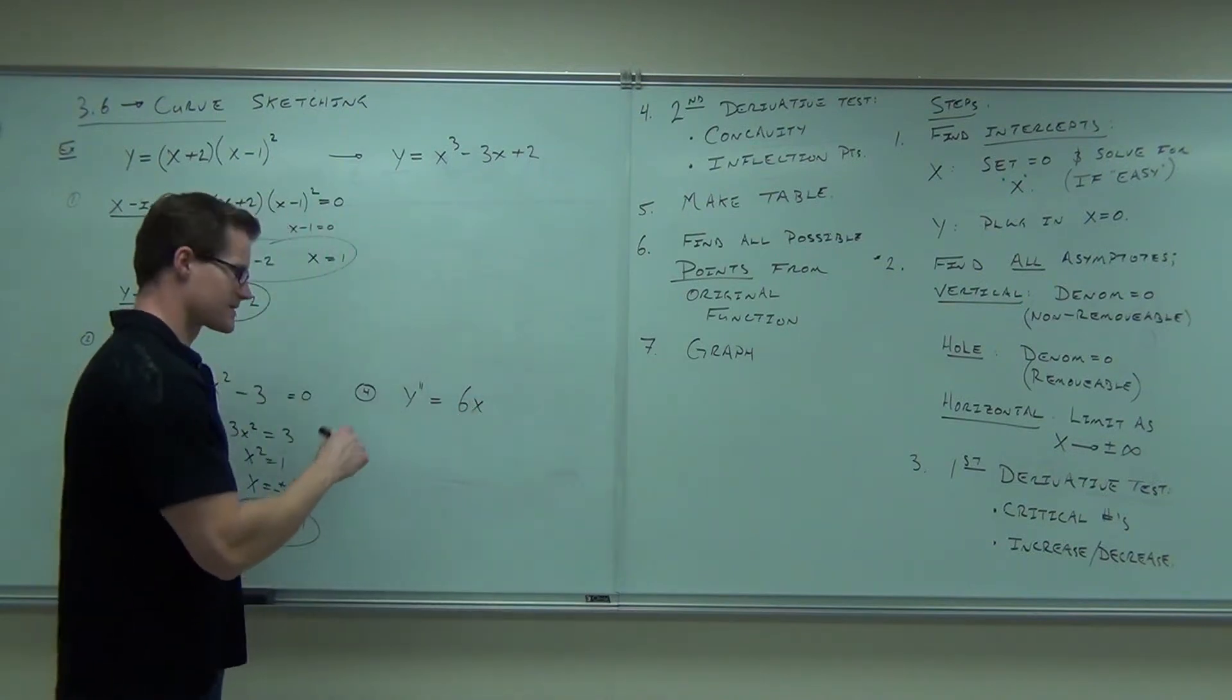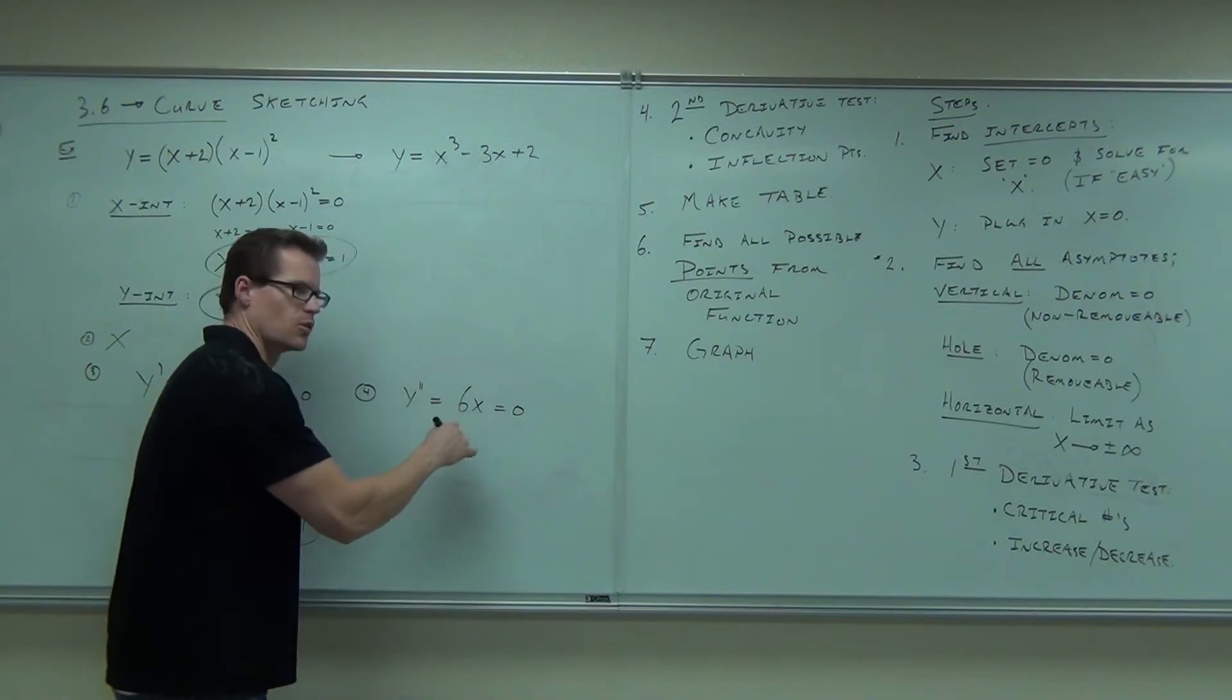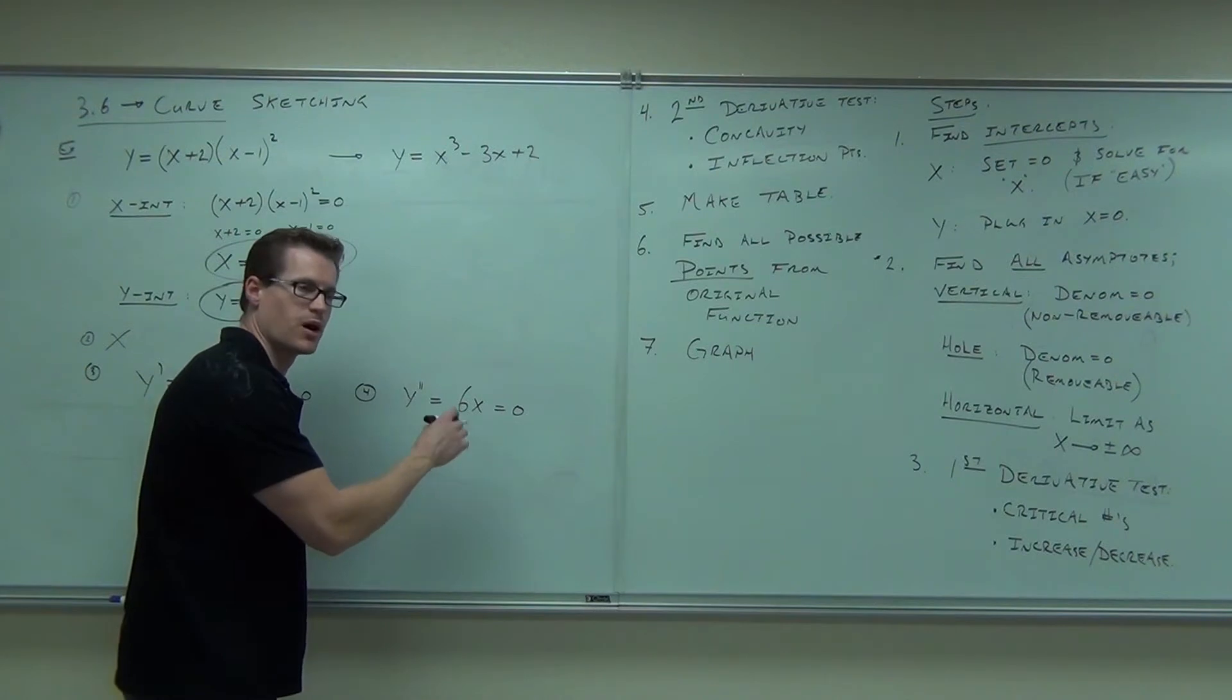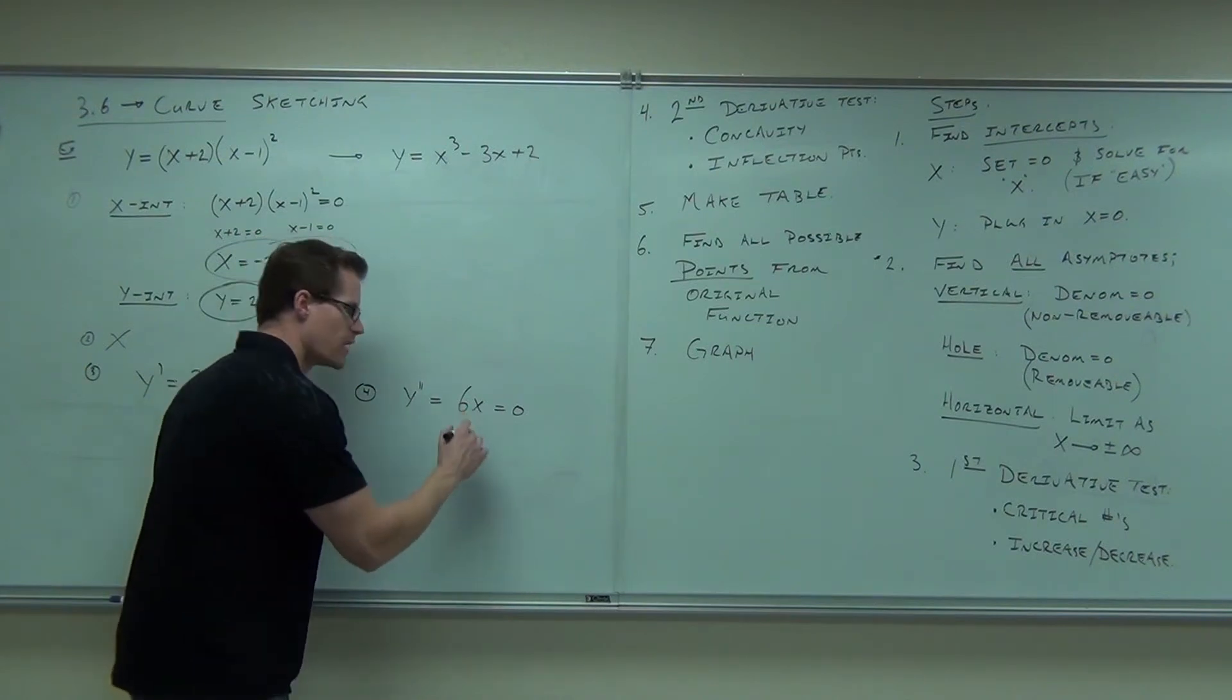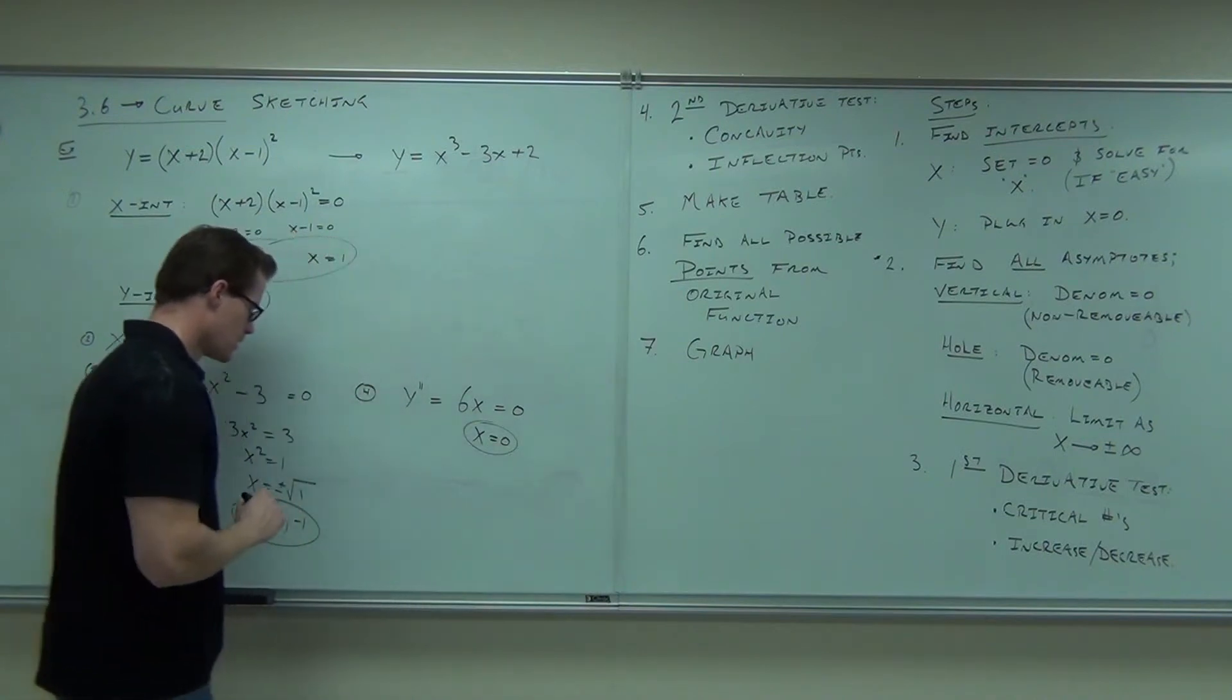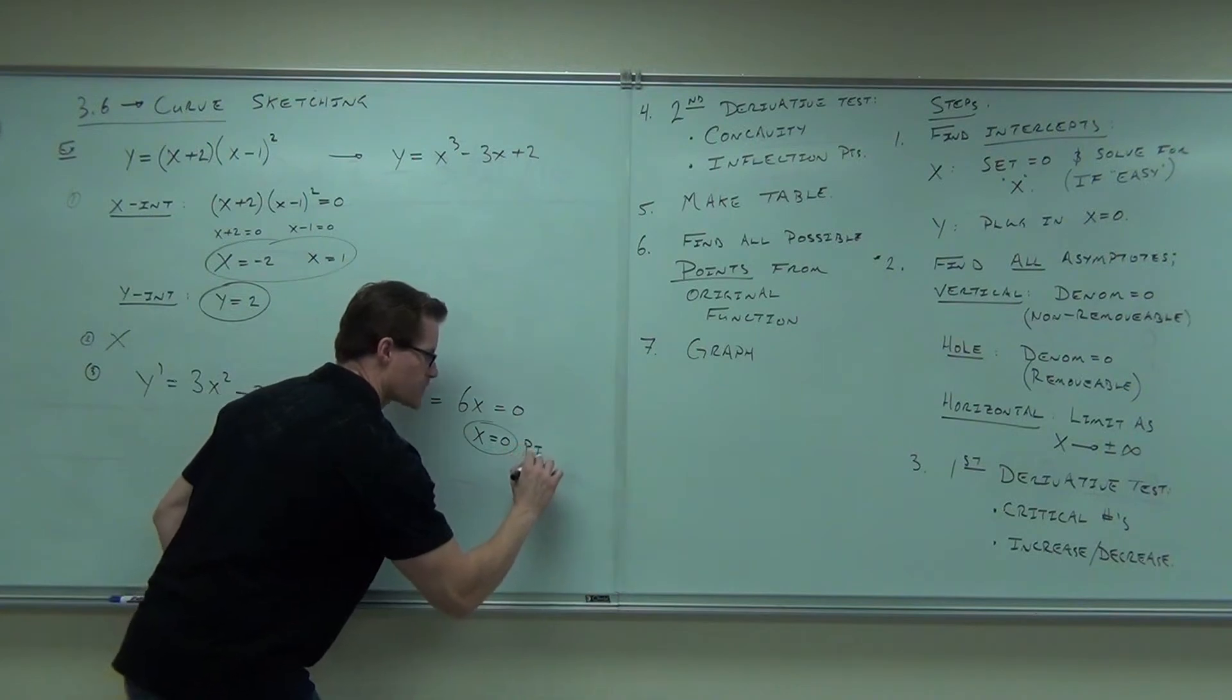What do you do with that 6x? Six x equals zero. When you solve for zero, what are you finding here? Inflection points. You're trying to find possible inflection points. So when you divide by six, x equals zero. These right here are your critical numbers. This right here is a possible inflection point.